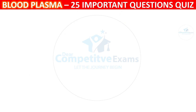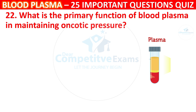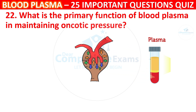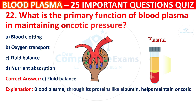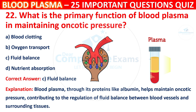Question 22: What is the primary function of blood plasma in maintaining oncotic pressure? The options are Blood clotting, Oxygen transport, Fluid balance, or Nutrient absorption. The correct answer is C, i.e. Fluid balance. Blood plasma, through its proteins like albumin, helps to maintain oncotic pressure, contributing to the regulation of fluid balance between blood vessels and surrounding tissues.